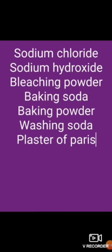In the last video we talked about sodium chloride and sodium hydroxide, the preparation of sodium hydroxide through the chloralkali process, and the important uses of the products formed. In this video we are going to talk about bleaching powder — how it is prepared and what are the important uses of bleaching powder.